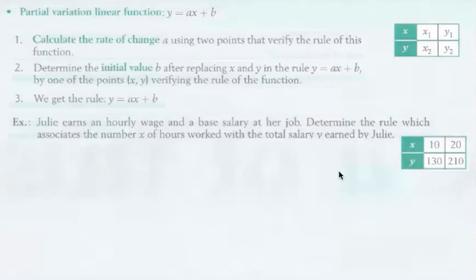So what we're going to do is we're going to find the rate of change first, delta y over delta x. So delta y over delta x is going to be 210 take away 130. The delta x is going to be 20 take away 10, which gives us 80 over 10, which is $8 per hour. So Julie's making $8 an hour. That's the a. So we know that y is equal to 8x plus b.